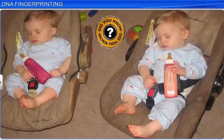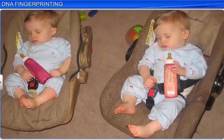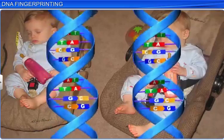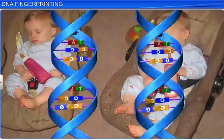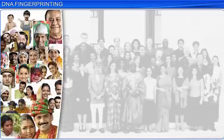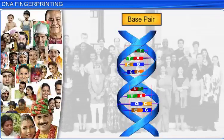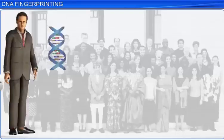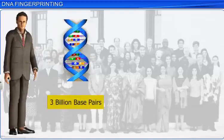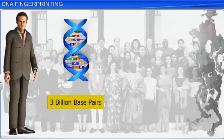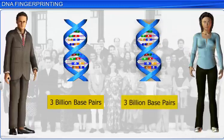Did you know that except for identical twins, it is very unlikely for two individuals to have the same DNA pattern? It is the small difference in base pair sequences of DNA that make the phenotypic appearance of each individual unique. The human genome has about 3 billion base pairs. Therefore, it would be a time-consuming and expensive task to find out the genetic difference between two individuals, as it would require comparing two sets of 3 billion base pairs.